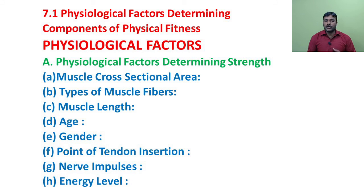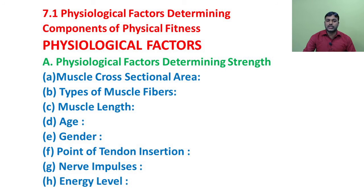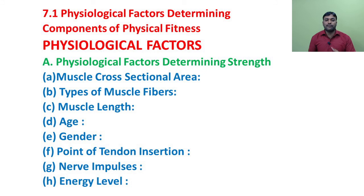Next factor is point of tendon insertion. Muscle strength is influenced by the point of tendon insertion of an individual. For example, two persons may have the same muscle length, but if the point of tendon insertion is different, the tendon attached to the respective bone at a better position produces greater strength. Nerve impulses also determine muscular strength; the intensity and number of motor units recruited determine the muscular strength.